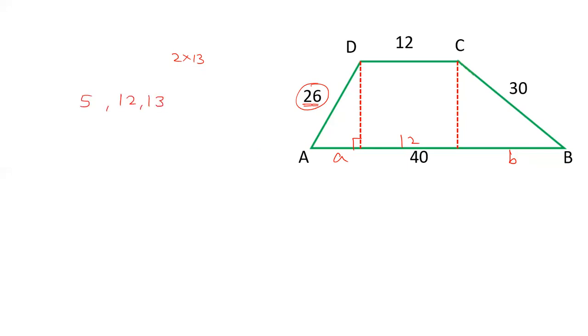So if the hypotenuse is 26, double of 13, the two sides are 24 and 10. So either this is 10 and this is 24 or this is 24 and this is 10. The value of B will be 4 only because the total sum is 40. So 12, 24, and 4, so this is 4 and this is 10. And this does not give Pythagoras triplet 10, 4. 10 square plus 4 square is not equal to 30 square. In fact, this is not a triangle.